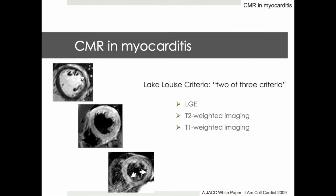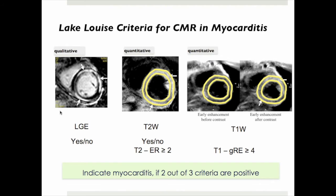Lake Louise criteria are a composite of myocardial late gadolinium enhancement, T2 and T1 weighted imaging, which includes the presence of late gadolinium enhancement in a typical myocarditic pattern, with a corresponding increase in T2 signal, as well as increase in relative measures, including edema ratio of more than 2 and global relative enhancement ratio of more than 4.